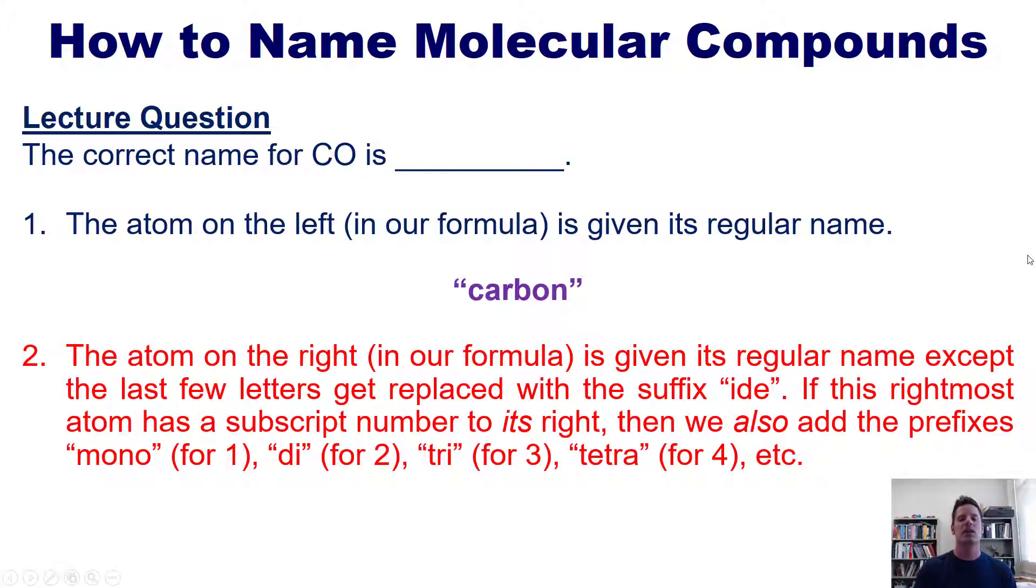Now you might ask, why don't we call it monocarbon monoxide? Remember, we never use the prefix mono for the element that's on the left in the formula. We only use the prefixes di and above. Now you might ask, why that confusing rule? I don't know. I'm not the one that invented it. I'm just the one who teaches it.